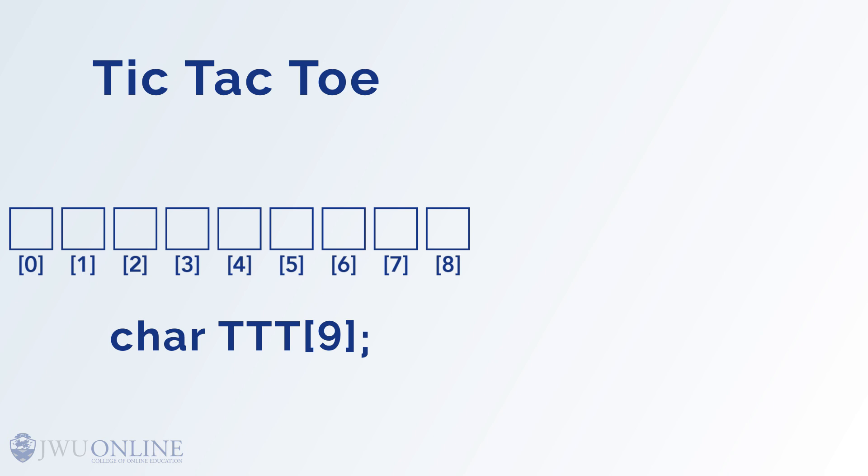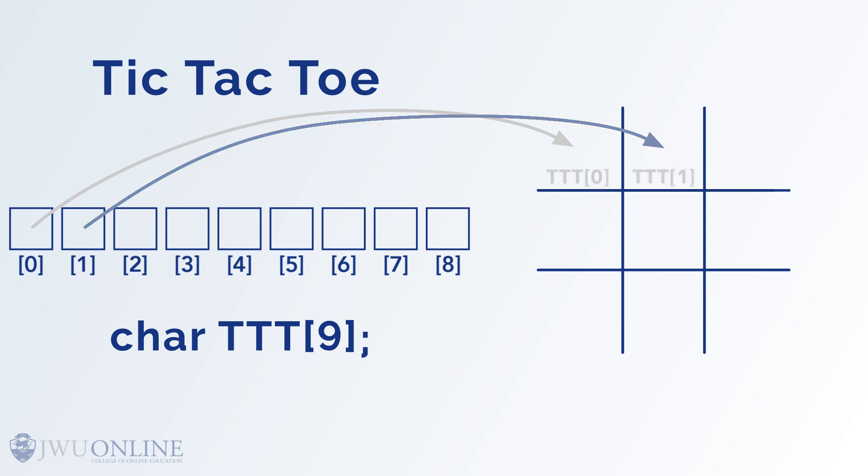That command means provide 9 character type variables and name the starting address T-T-T. So the upper left box on the board is T-T-T sub 0. The upper middle is T-T-T sub 1. The upper right is T-T-T sub 2. And the middle square is T-T-T sub 4, all the way up to the lower right, T-T-T sub 8. Now remember, there is no T-T-T sub 9 because we started at T-T-T sub 0.